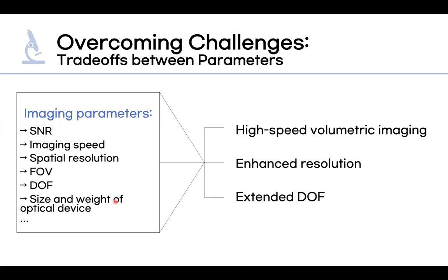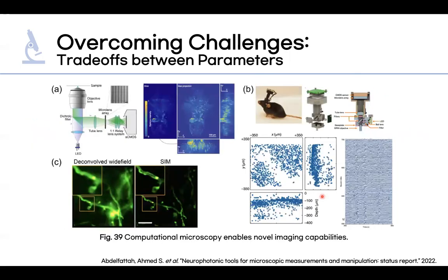To overcome this, new types of computational microscopes have been developed to enable high-speed volumetric imaging, enhanced resolution, and extended depth of field. For example, light field microscopy enabled single-shot in vivo 3D recording of neuronal activity. The schematic for light field microscopy is shown here, along with images captured with LFM showing 3D recording of neuronal activity.